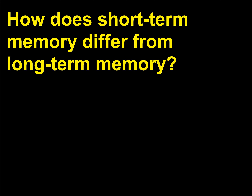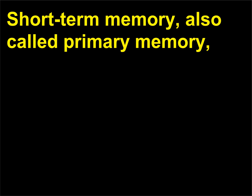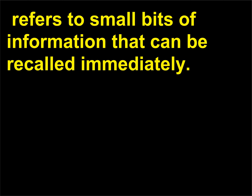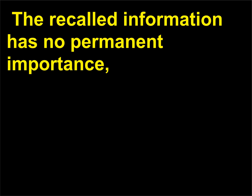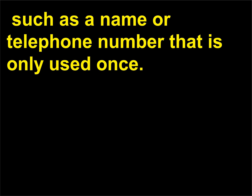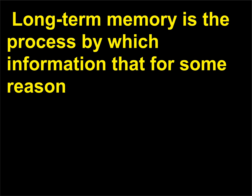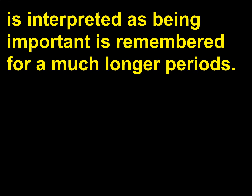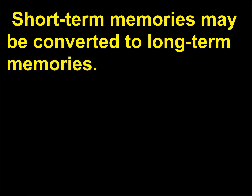How does short-term memory differ from long-term memory? Short-term memory, also called primary memory, refers to small bits of information that can be recalled immediately. The recalled information has no permanent importance, such as a name or telephone number that is only used once. Long-term memory is the process by which information that is interpreted as being important is remembered for much longer periods. Short-term memories may be converted to long-term memories.